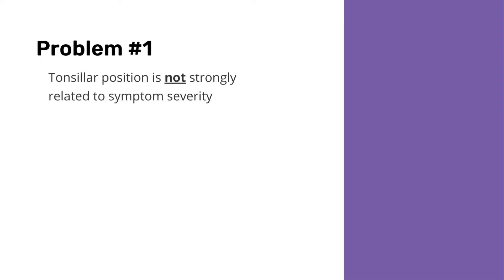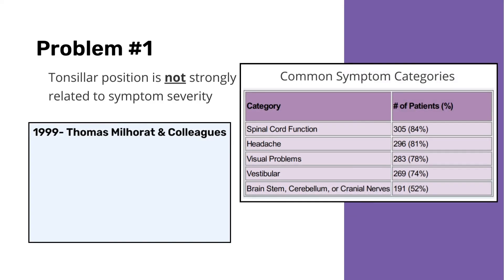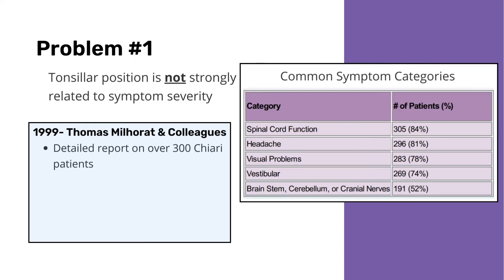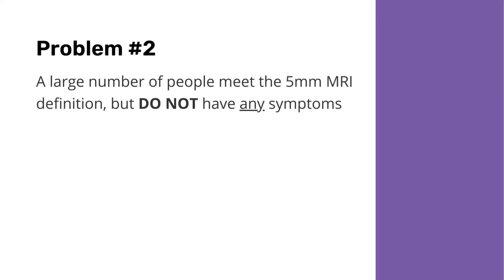The first problem that came to light was that tonsillar position is not strongly related to symptom severity. In 1999, Thomas Millerat and colleagues published a landmark paper which provided a detailed report on over 300 Chiari patients. They found that tonsillar position was not related to symptom severity. They also identified patients with clear indications of Chiari who had less than three millimeters of herniation. The second problem that emerged is that as MRIs became more and more common, it became clear that a certain number of people meet the five millimeter MRI definition of Chiari but do not have any symptoms.